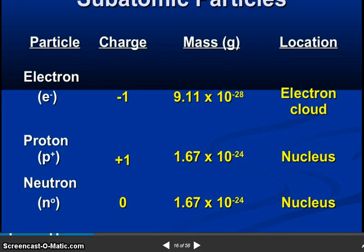So subatomic particles: electrons, protons, and neutrons. Electron E minus, proton P plus, neutron N zero. Charge minus 1, plus 1, zero. Mass 9.11 times 10 to the minus 28, 1.67 times 10 to the minus 24, 1.67 times 10 to the minus 24. Electron cloud and nucleus.